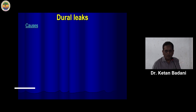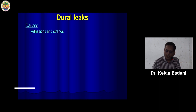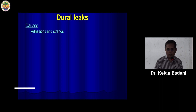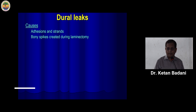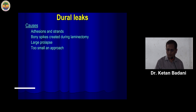What are the causes? It is partly omission, partly commission — I would say more of omission in 75% and 25% commission. Some important reasons are strands and adhesions of dura to surrounding structures which are not noticed or not separated properly before using instruments. Bony spikes created during laminectomies can create a sharp edge, so when you retract the dura against those sharp edges, you can get a dural tear. A very large prolapse makes access difficult, and shortage of space might cause a dural tear.